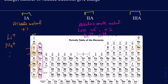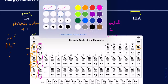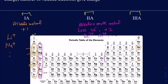Then let's look at the Group 3A elements: aluminum, gallium, and indium. Boron is a metalloid so we don't worry about that. These Group 3A metals have three valence electrons and they like to lose three electrons. When they lose three electrons, they get a 3+ charge. So aluminum, gallium, and indium all have a 3+ charge when making compounds.